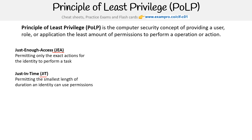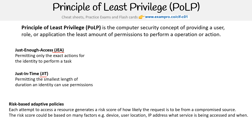JIT is the difference between having long-lived permissions or access keys versus short-lived ones. The most progressive element of PULP is now risk-based adaptive policies, where each attempt to access a resource generates a risk score based on factors such as device, user location, IP address, what service is being accessed, whether MFA or biometrics were used.